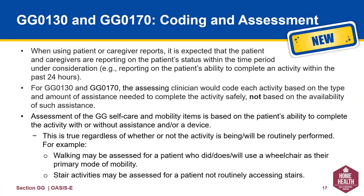The guidance for completing these assessments has been further expanded. When using patient or caregiver reports, it's expected the patient and caregivers are reporting on the patient's status within the time period under consideration. For 130 and 170, the assessing clinician would code each activity based on the type and amount of assistance needed to complete the activity safely, not based on the availability of that assistance. Assessment of self-care and mobility items is based on their ability to complete the activity, with or without assistance and with or without a device. If the activity is not routinely done, such as the use of stairs for a person living in a one-floor setting, the clinician will need to use their clinical judgment to answer this question.